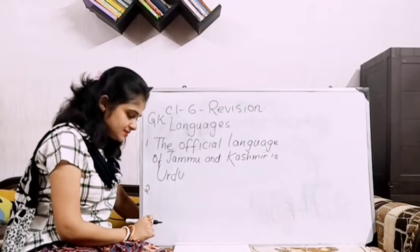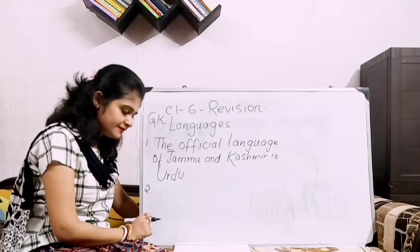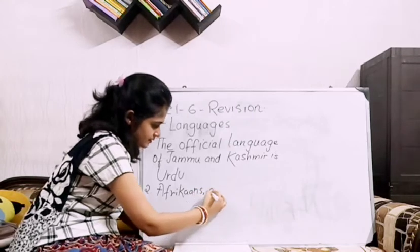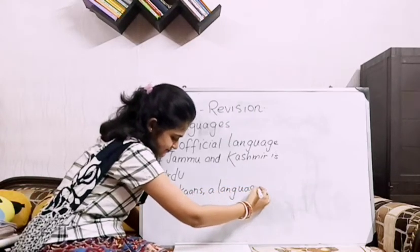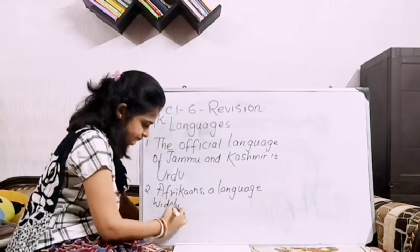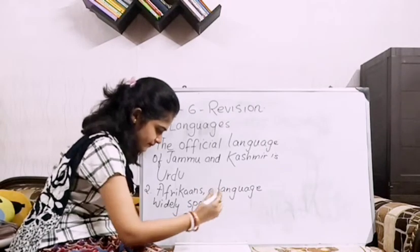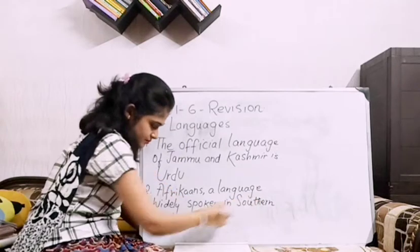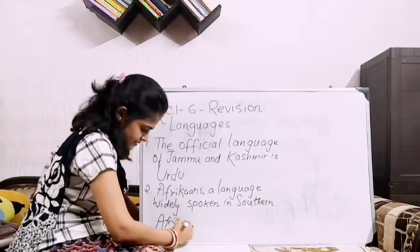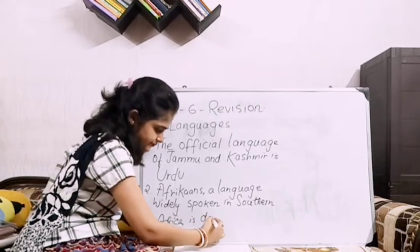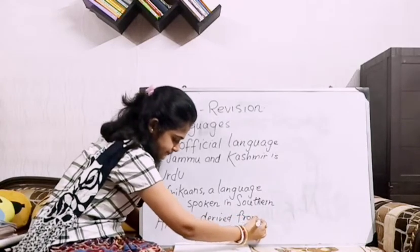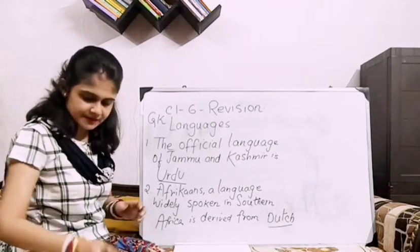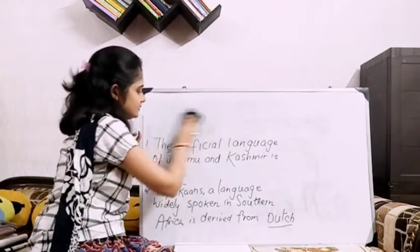Question 2: Afrikaans — a language widely spoken in Southern Africa — is derived from Dutch. We will write: Afrikaans, a language widely spoken in Southern Africa, is derived from Dutch. D-U-T-C-H. Pause the video and write down the answers so it will be easy for you.